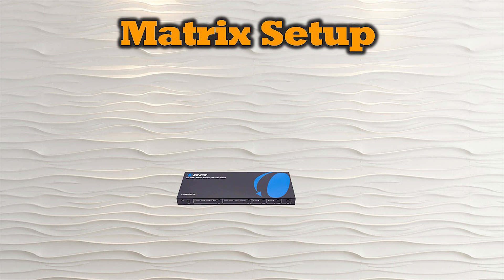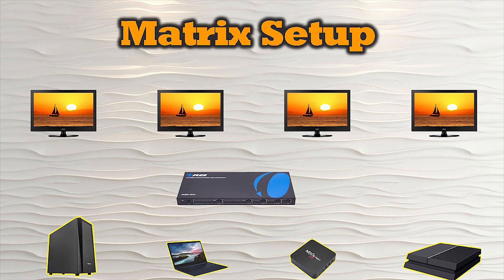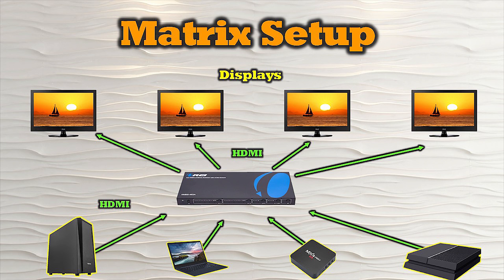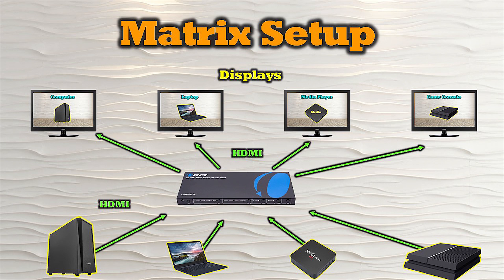The HDMI matrix offers more flexibility and allows you to connect more than one output device to a number of input devices. In this example we're using a four-input, four-output version. You start by connecting each of your displays to the HDMI matrix using an individual HDMI cable for each, then connect each of your input media devices to the matrix as well. The big advantage is it allows you to send each input to its own output, or even one input to all four outputs simultaneously.